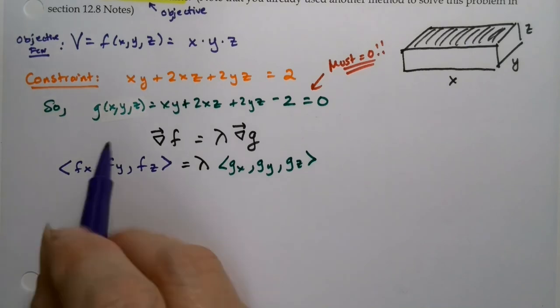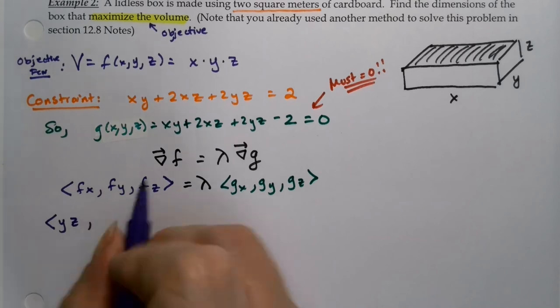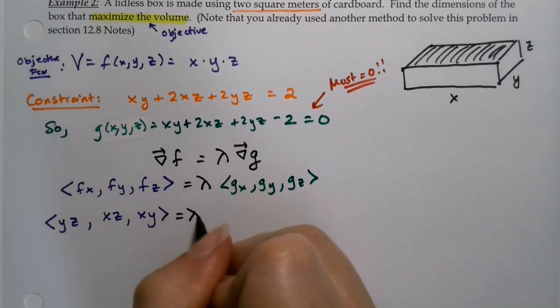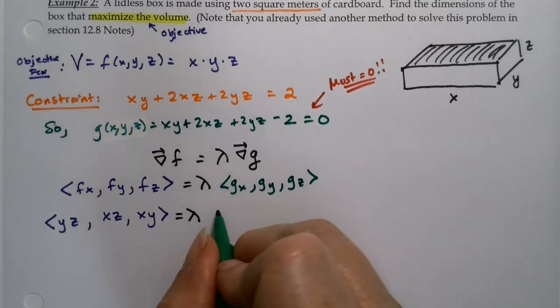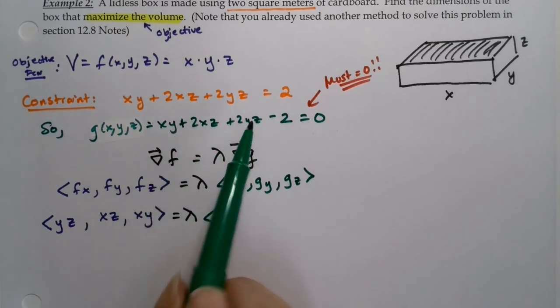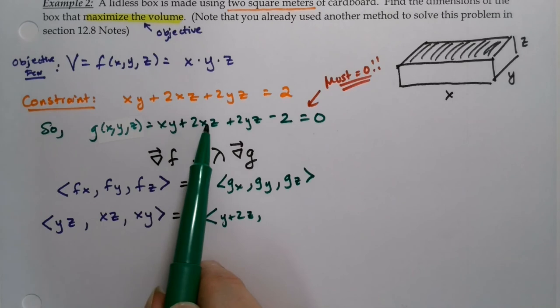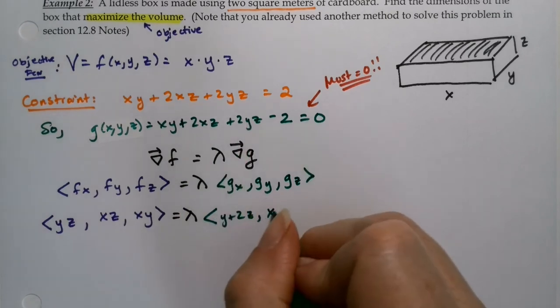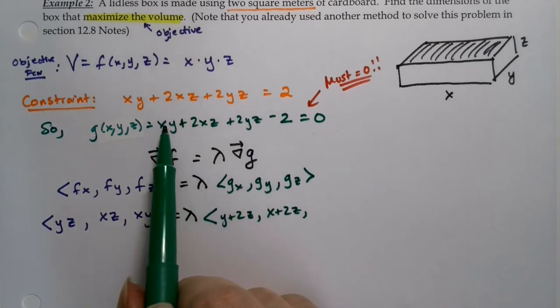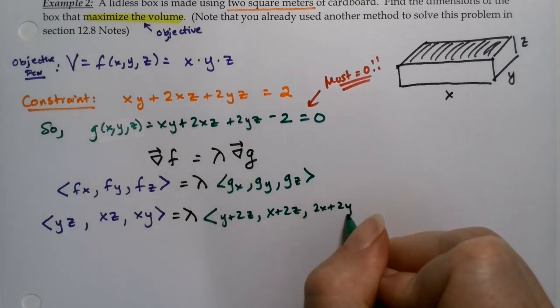So let's start with fx. The derivative of this with respect to x would be yz. So yz, xz, xy is equal to lambda times, and then this will actually be a little trickier derivative. So y plus 2z, x plus 2z, and then for the z portion, nothing, so that's zero. This has a z, so 2x plus 2y. There we go.